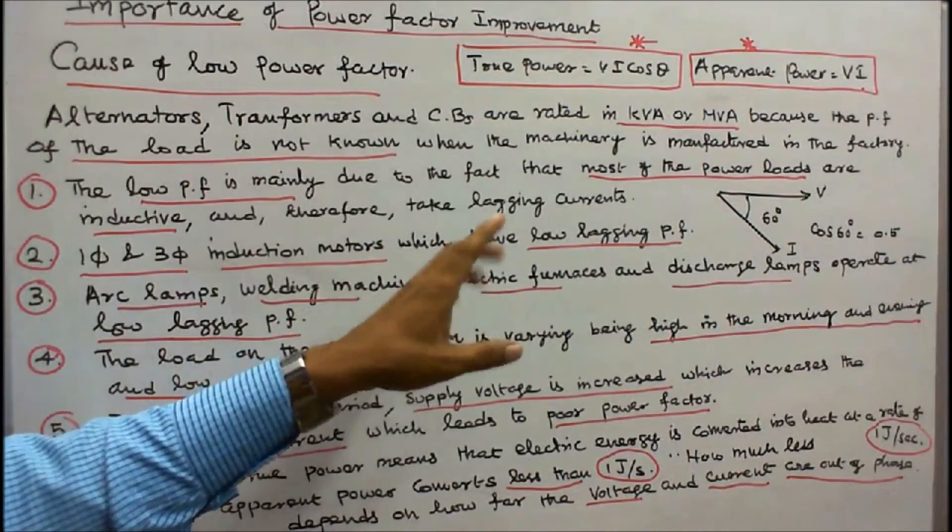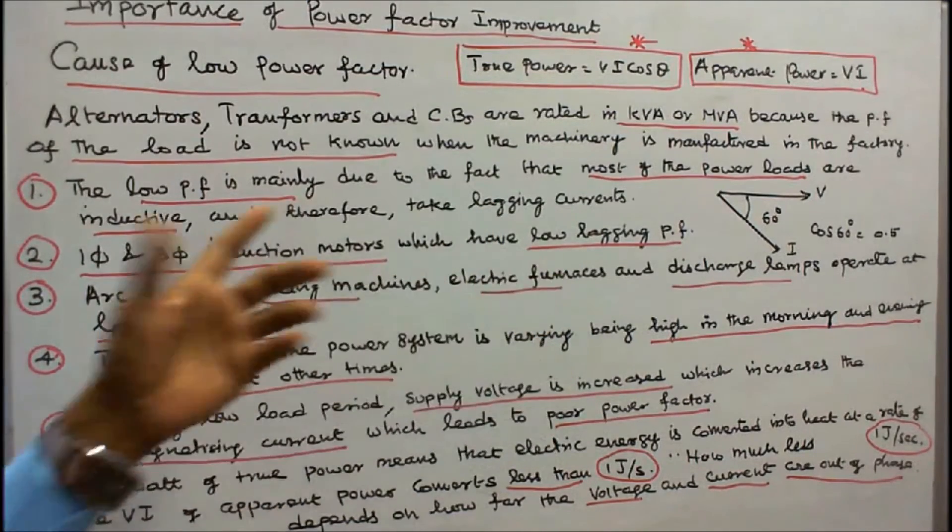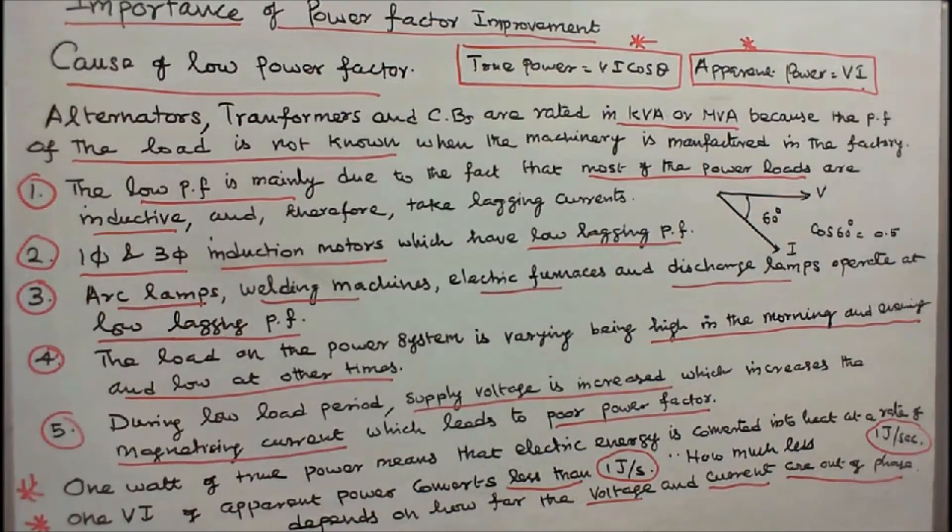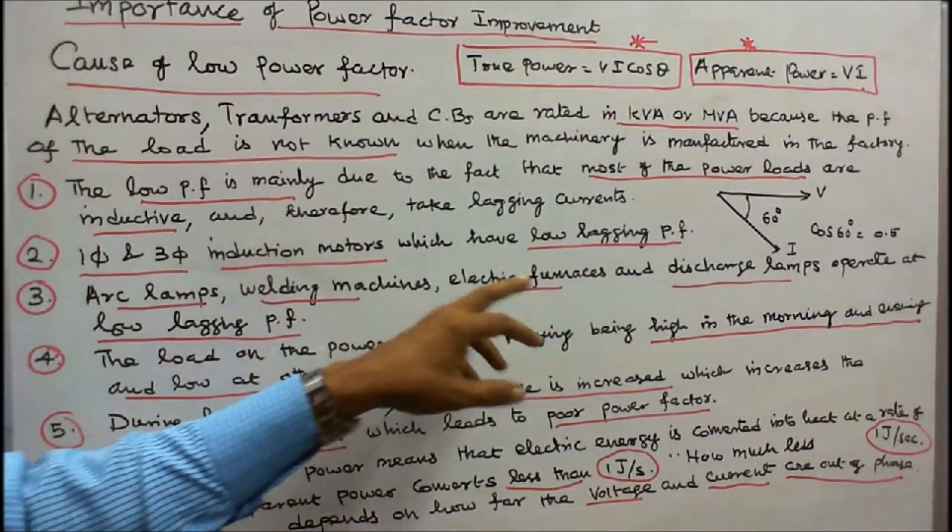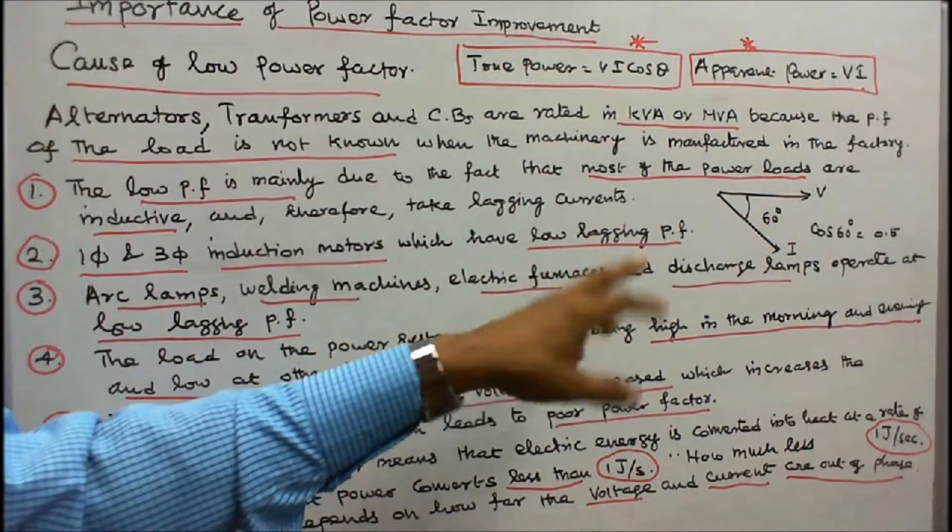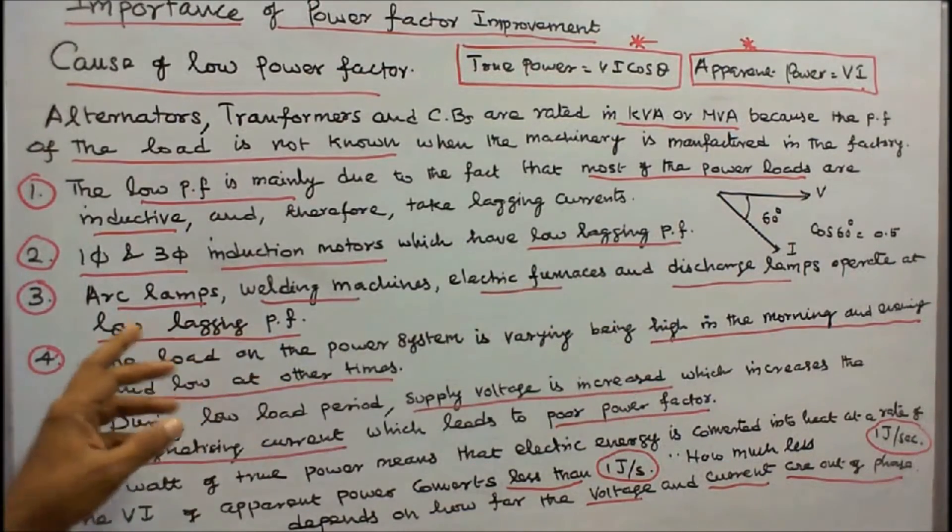Which have low lagging power factor because they are inductive loads. Number 3: Arc lamps, welding machines, electric furnaces, and discharge lamps operate at low lagging power factor.